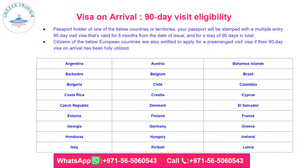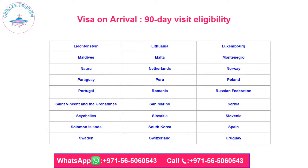For visa on arrival with 90-day visit eligibility, passport holders of eligible countries will have their passport stamped with a multiple-entry 90-day visit visa valid for six months from the date of issue, for a total stay of 90 days. Citizens of certain European countries are also entitled to apply for a pre-arranged visit visa if their 90-day visa on arrival has been fully utilized.